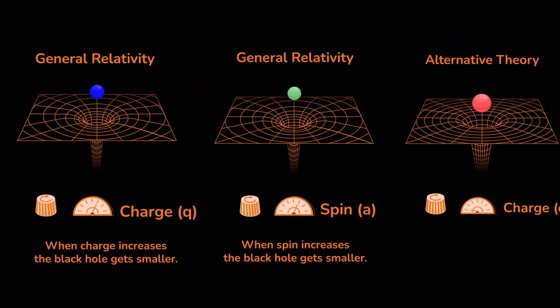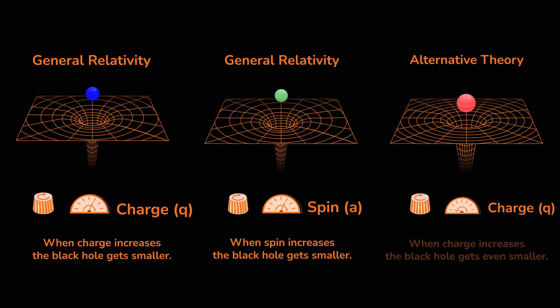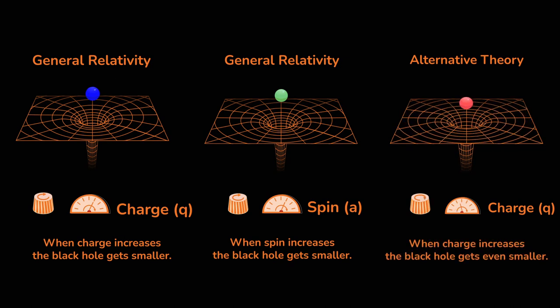Alternative theories of gravity also predict black holes. These can be smaller or larger than the black holes of general relativity.